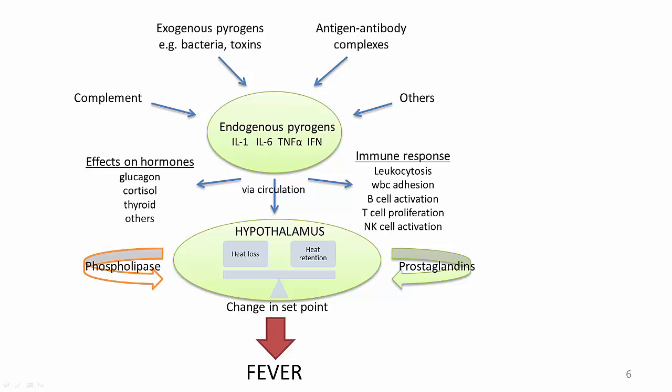These endogenous pyrogens enter the circulation and can have a number of effects on the body. For example, they can affect the up or down regulation of hormones produced by glands in the endocrine system, such as cortisol and glucagon. The body also produces an innate immune system response, which includes leukocytosis, increased white blood cell adhesion, activation of B-cells and natural killer cells, and proliferation of T-cells. Endogenous pyrogens also enter the hypothalamus, and through inflammatory mediators including prostaglandins and phospholipase, lead the hypothalamus to favor heat retention over heat loss. An elevation in body temperature is therefore caused by the cytokine-induced upward displacement of the set point of the hypothalamic thermoregulatory center.